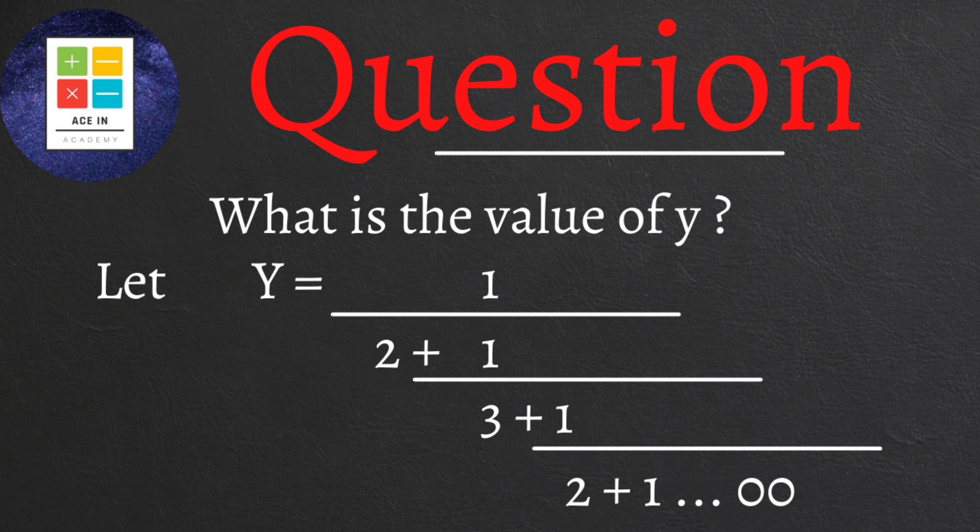We are provided four options for this question. Option A: root 13 plus 3 by 2, option B: root 13 minus 3 by 2, option C: root 15 plus 3 by 2, and option D: root 15 minus 3 by 2.